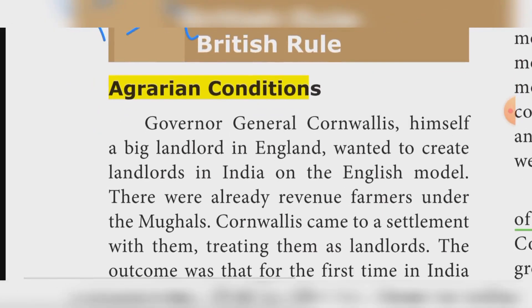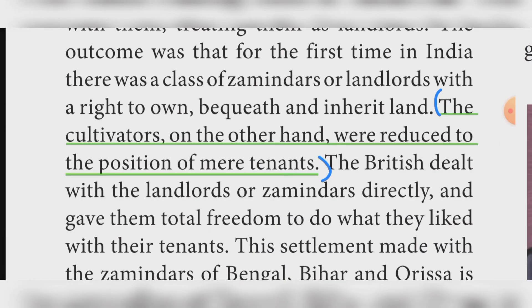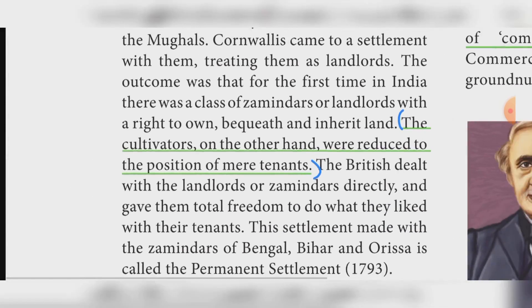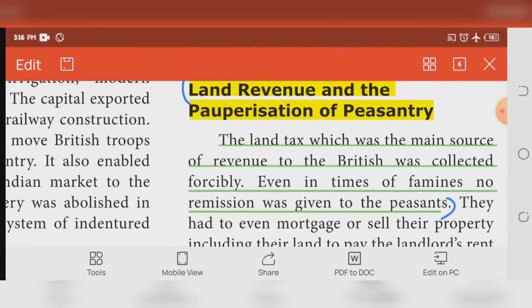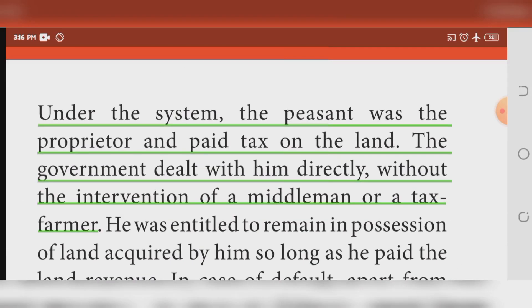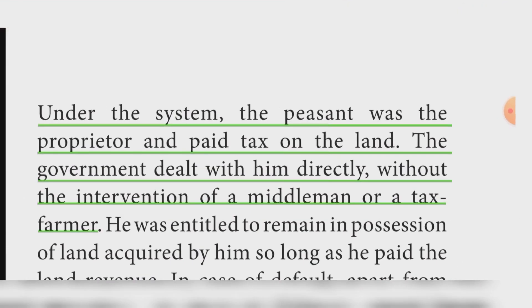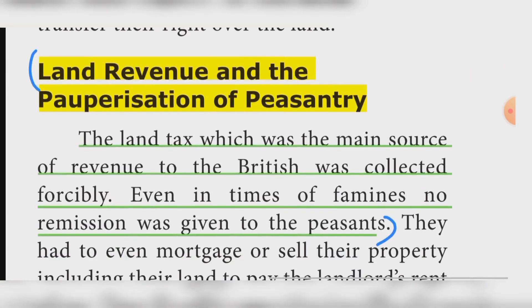Agrarian conditions: The cultivators were reduced to the position of mere tenants. The Ryotwari system was a different revenue system introduced in South India. Under this system the peasant was the proprietor and paid tax on the land directly to the government, without the intervention of a middleman or tax farmer. Land revenue led to the pauperization of the peasantry.